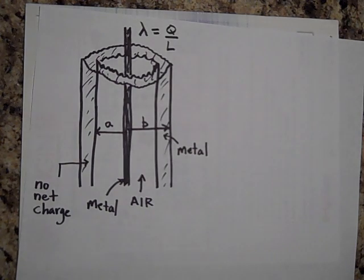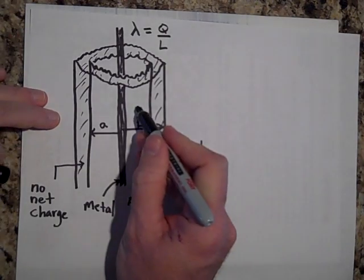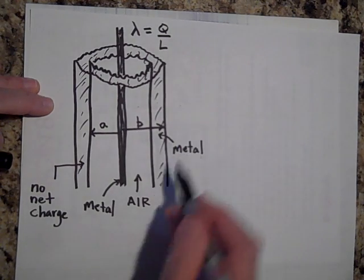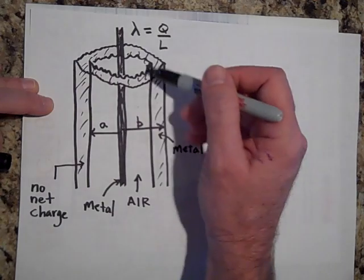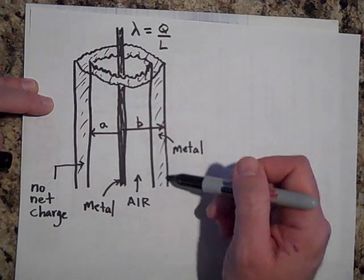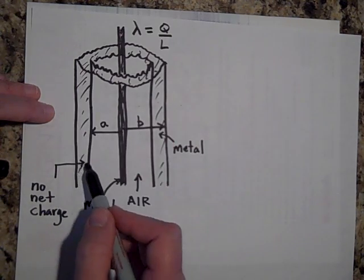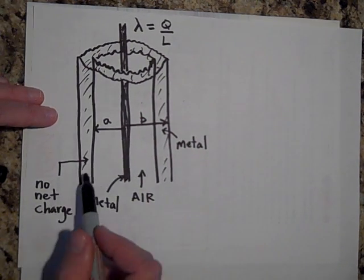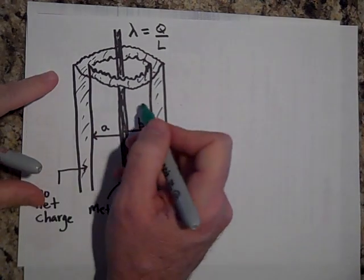There are a few things they're going to ask us to do: find the electric field at a point inside, find the electric field inside the metal, find the electric field outside, and find the charge per length for the inner surface and outer surface. Let's assume that the net charge on the cylindrical shell is zero — there is no net charge on the outer shell.